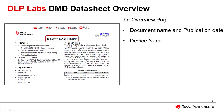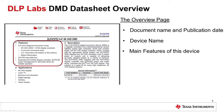The device name is shown in the center top of the first page of the DMD datasheet. The main features of the DMD, including the array size diagonal measurement — 0.47 inches in this example — the resolution, the mirror size, and tilt angle, along with other features specific to this device, are shown in section 1.